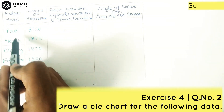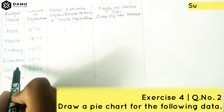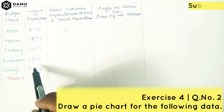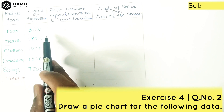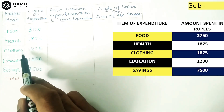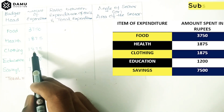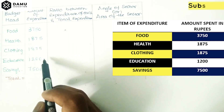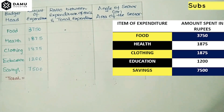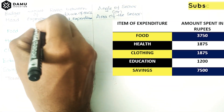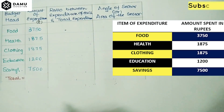They have given the following categories: food, health, clothing, education, and savings. The expenditures given are: food — 3,750 rupees; health — 1,875 rupees; clothing — 1,875 rupees.